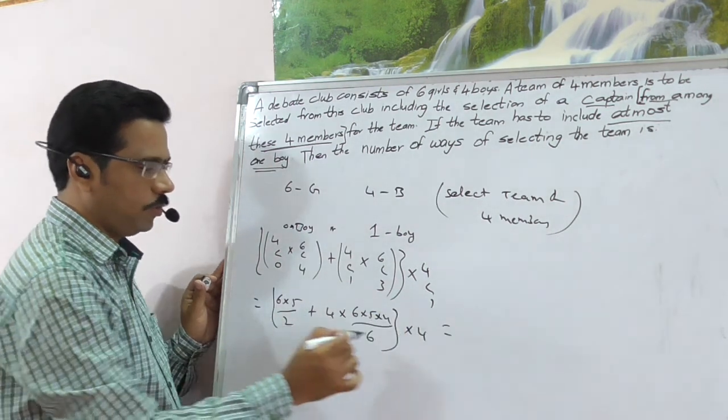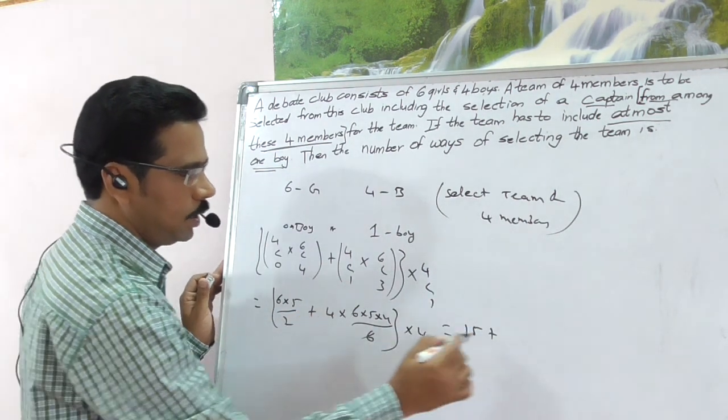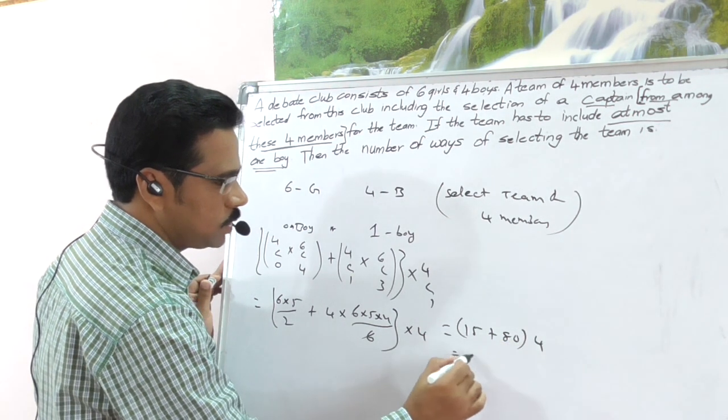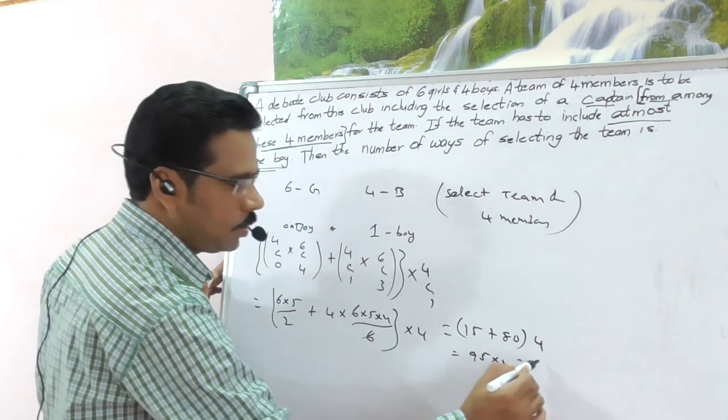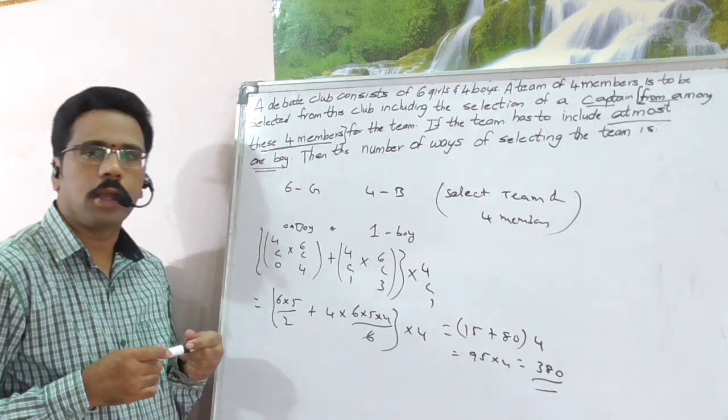Now, what is this value? 15 plus 6, 6 gets cancelled, 4 of 20. That is 80 of 4. Now, this is 95 of 4. Right. The value is 380. So, for this question is 380.